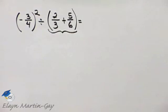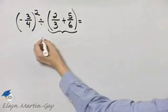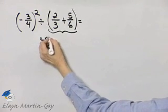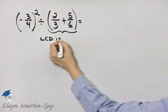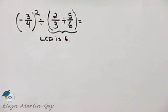How do we add fractions? To add fractions we must have the same denominator. What is the least common denominator here? The least common denominator is six.